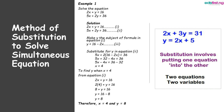To solve for x, we substitute 16 minus 2x for y in equation 2, and we have 5x plus 2(16 minus 2x) equal to 36. We expand the bracket and we have 5x plus 32 minus 4x equal to 36. Collecting like terms, we have 5x minus 4x equal to 36 minus 32, so x equal to 4.